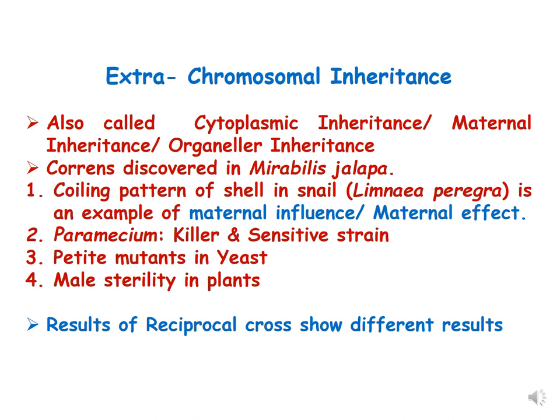Let us revise what we have already done in the last two lectures on extra-chromosomal inheritance. We learnt that it is also called cytoplasmic inheritance because the traits are controlled by cytoplasmic genes. It is also called maternal inheritance because the traits are majorly controlled by mother genes, and it is also called organellar inheritance because the traits are controlled by genes present in organelles like mitochondria or chloroplast.